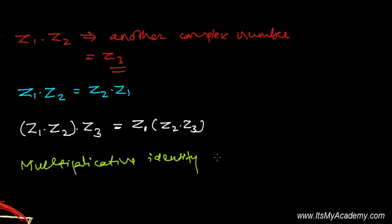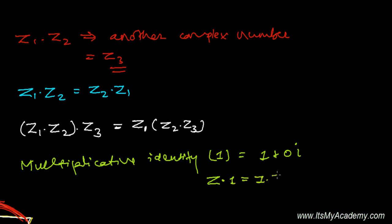Fourth, there exists a multiplicative identity, generally represented by 1, which equals 1 plus 0i. For any complex number Z, multiplying by the multiplicative identity gives the same complex number: 1 times Z equals Z. Whenever you multiply any complex number by 1 plus 0i, you'll get the same complex number back.